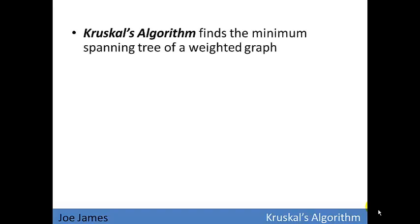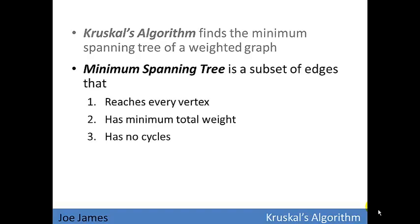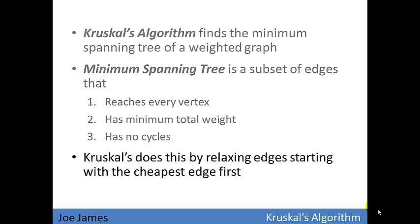Kruskal's algorithm finds the minimum spanning tree of a weighted graph. A minimum spanning tree is a subset of all the edges that reaches every vertex, has minimum total weight, and has no cycles. There could be more than one minimum spanning tree solution for a given graph. Kruskal's does this by relaxing all the edges one at a time, starting with the cheapest edge first.